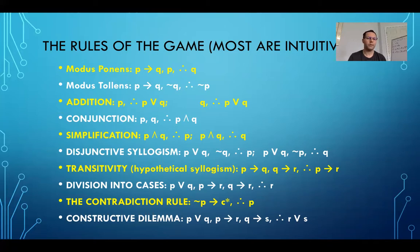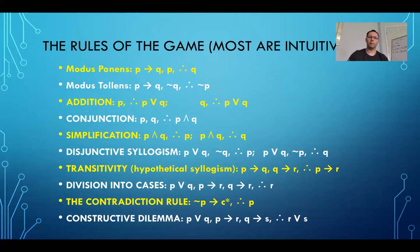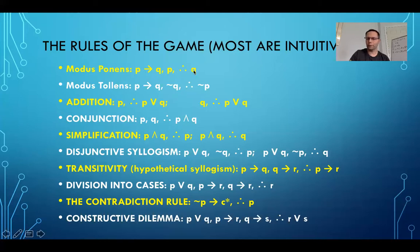Remember, modus ponens is an argument — these are all valid argument forms. It's an argument that says: if P then Q; P is true; therefore Q is true. Modus tollens: if P then Q; not Q; therefore not P. That simply is using the contrapositive.